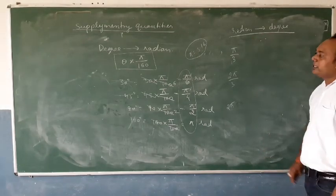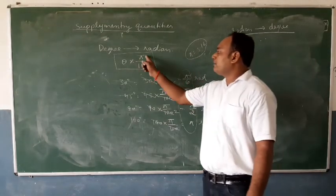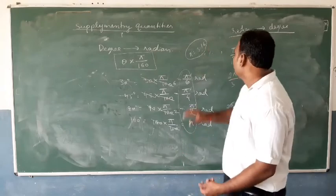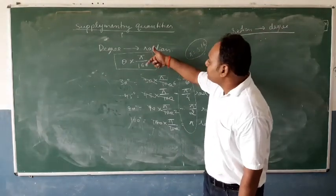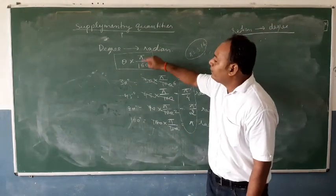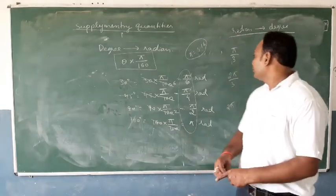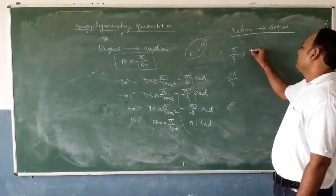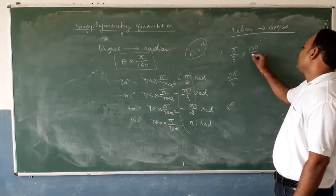When converting from radians to degrees, we multiply the angle in radians by 180 upon π. This is the reverse of what we did when going from degrees to radians.